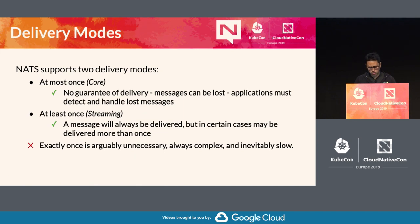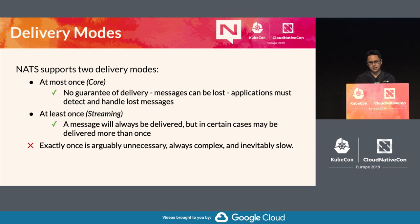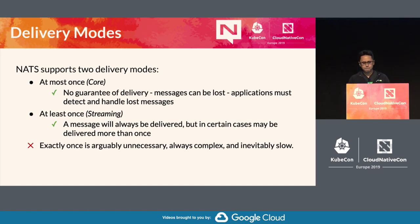There are two main delivery modes, separated into different projects. Core NATS is at-most-once delivery — you have to be connected to receive the message. We have another project named NATS Streaming, which gives you at-least-once delivery guarantees. This aligns more with the classic notion of a queue, where you publish something and expect someone to pick it up. There's message replaying and related features. The team is very opinionated on exactly-once requirements — Derek has implemented it in previous systems and the lesson is that it's not worth the effort.